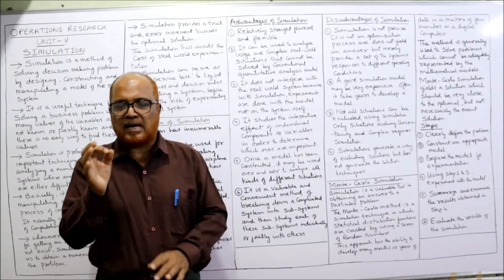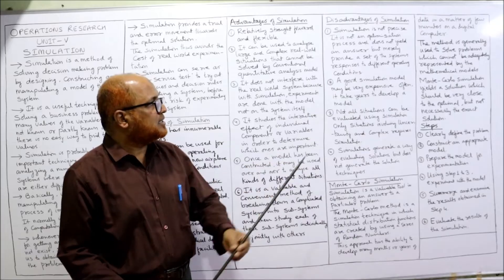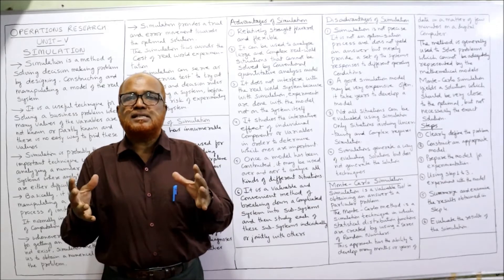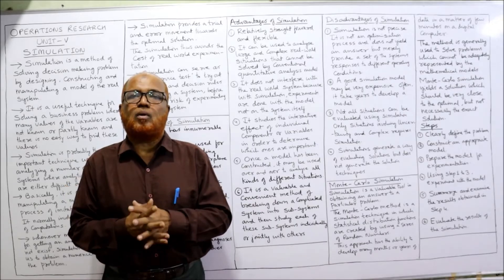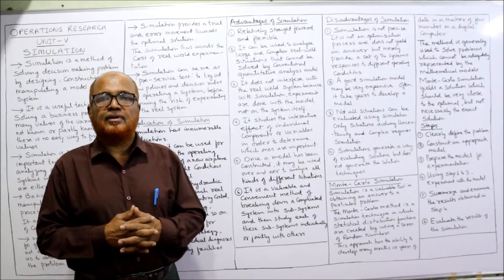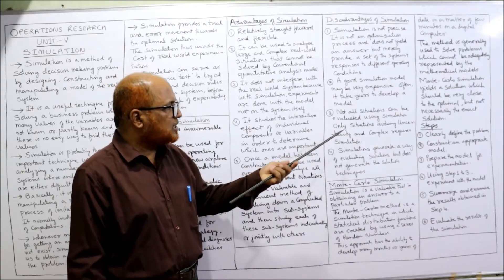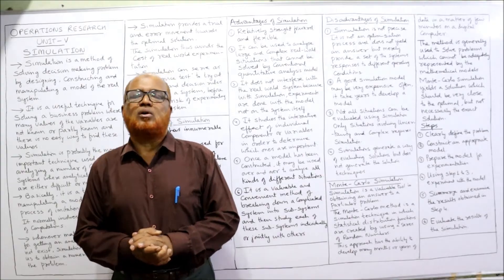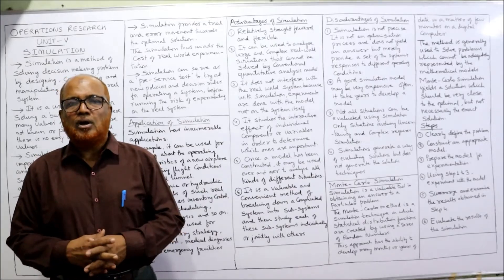Second, a good simulation model may be very expensive — often it may take years to develop. For example, in the case of military applications and missile development, a lot of time, resources, and money are required, making simulation costly to apply. Third, not all situations can be evaluated using simulation; only situations involving uncertainty and complexity are appropriate for simulation.